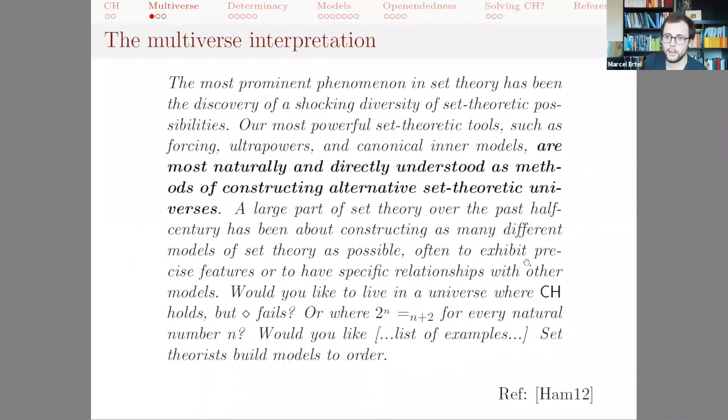Now there's a today quite prominent interpretation of this which in fact has already been proposed right after Cohen proved his result, but I'm going to use Joel Hamkins here as the proponent, the prototypical proponent of this view, the multiverse view, which essentially says that the most prominent phenomenon in set theory has been the discovery of a shocking diversity of set theoretic possibilities. Our most powerful set theoretic tools such as forcing, ultrapowers, and canonical inner models are most naturally and directly understood as methods of constructing alternative set theoretic universes.